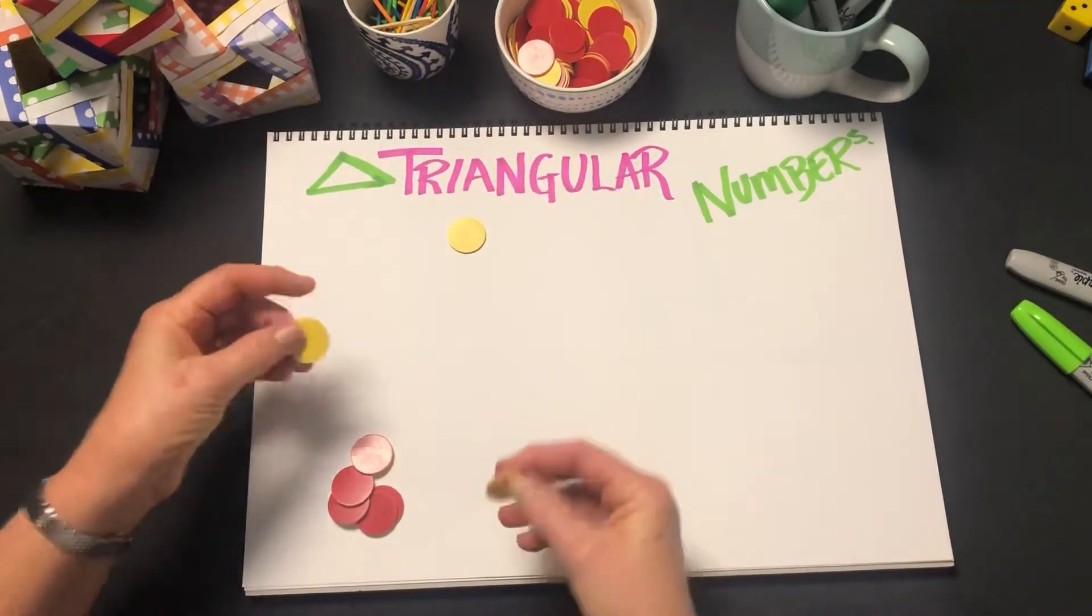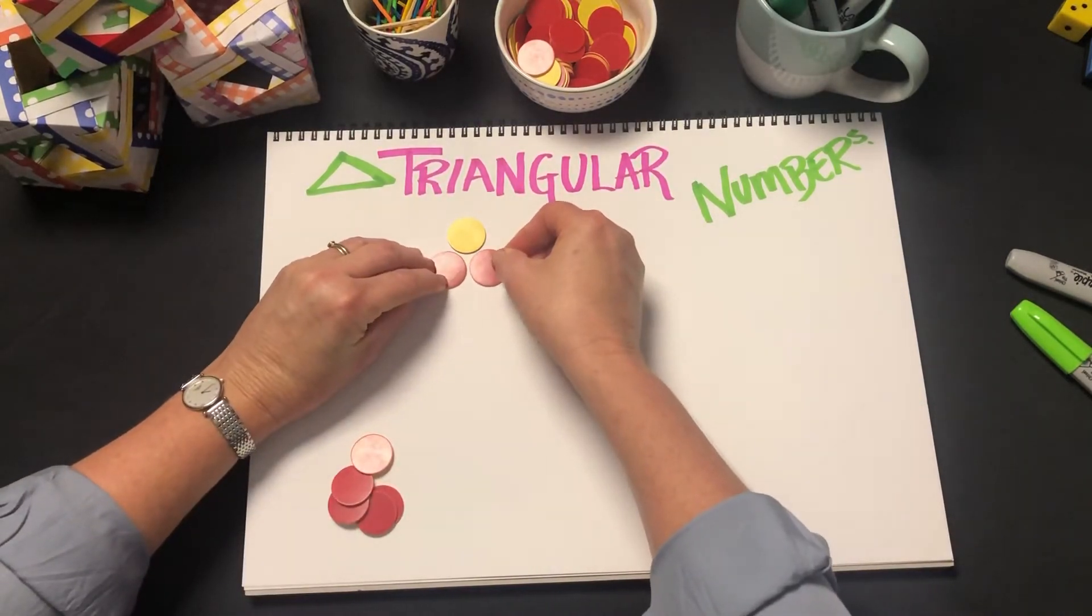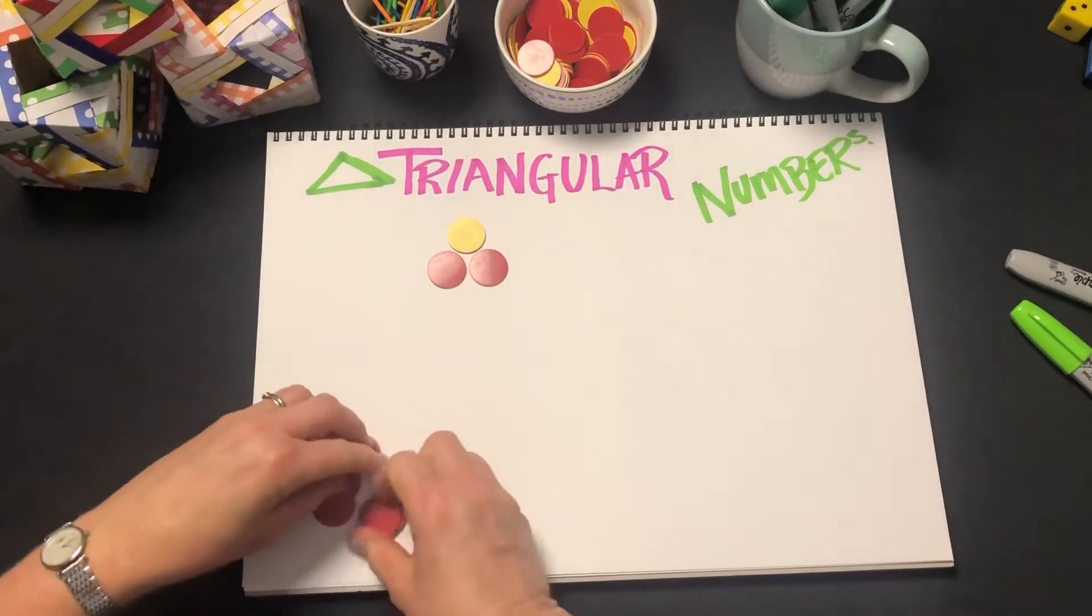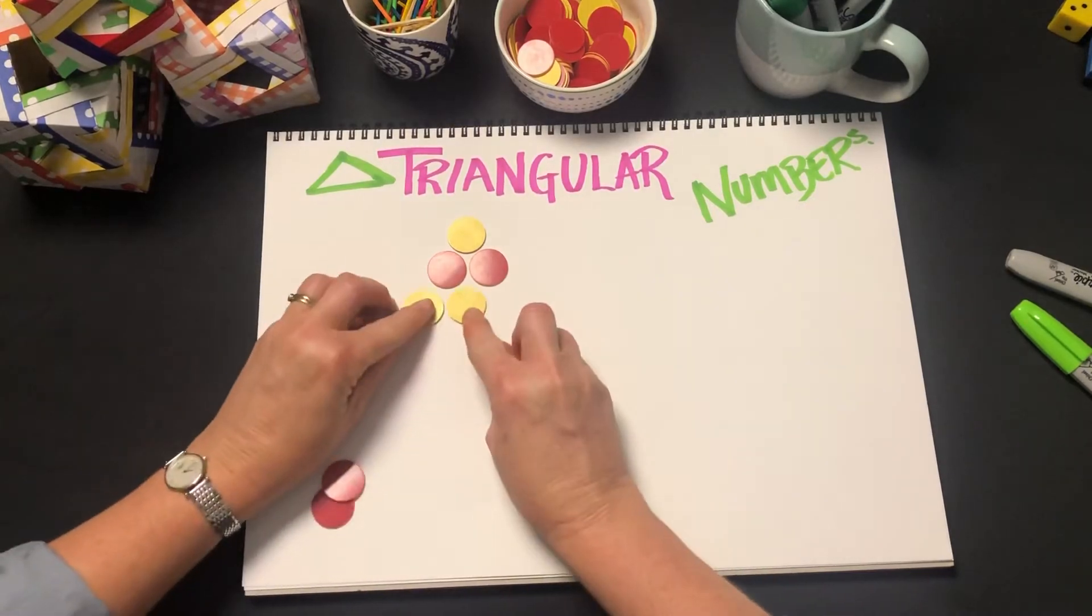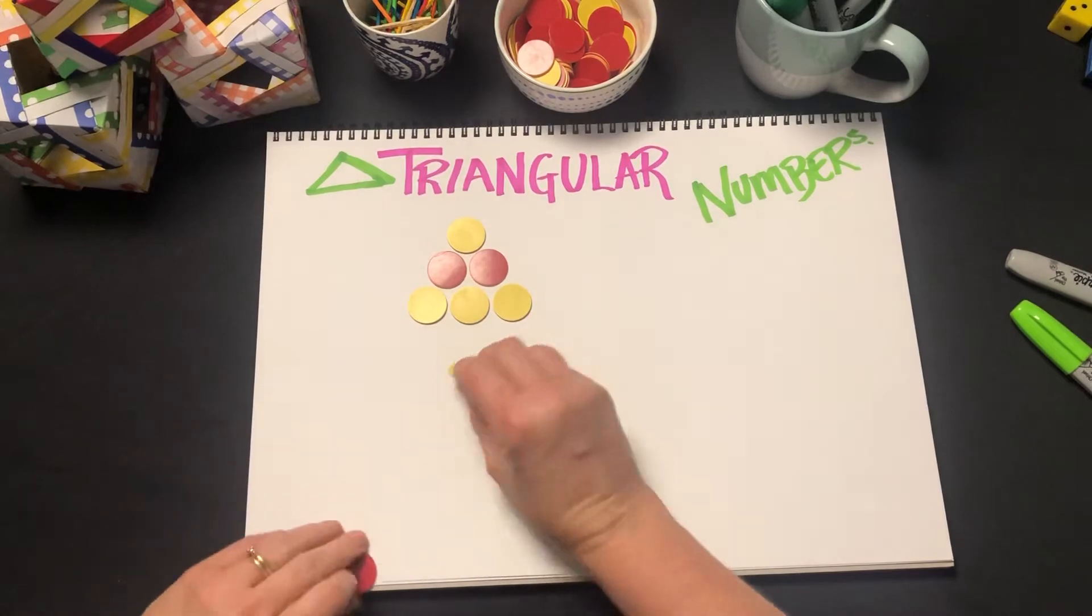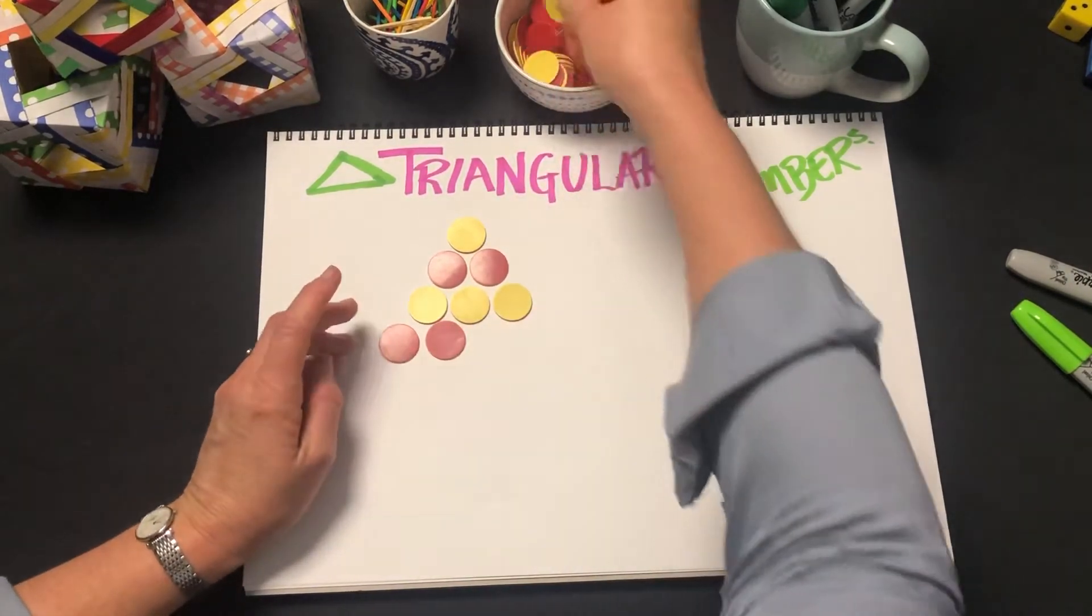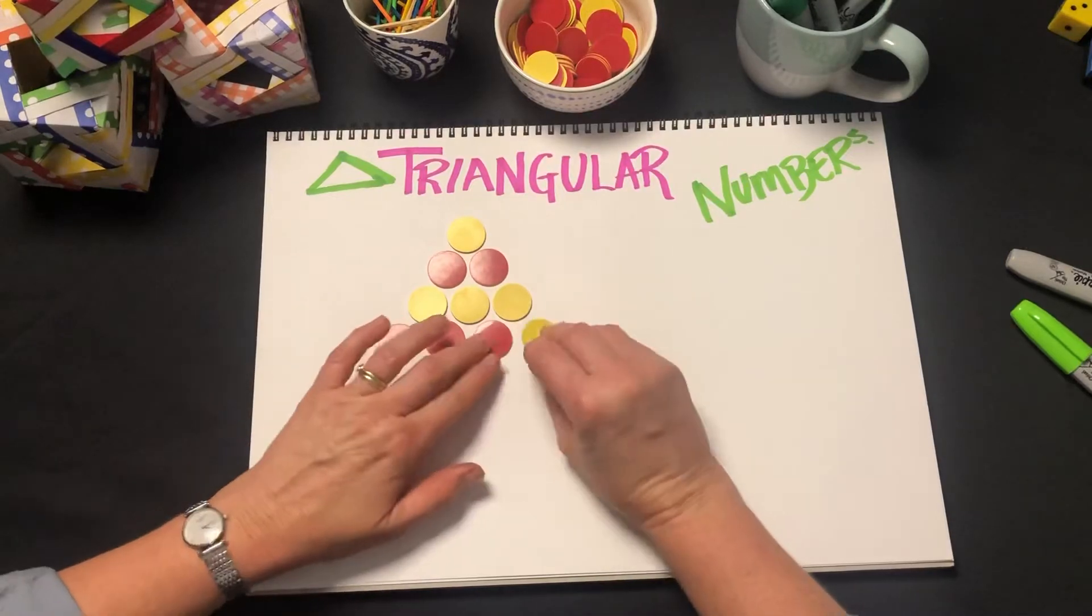We have one, doesn't look like a triangle at the moment, but three does, as does six, and as does ten.